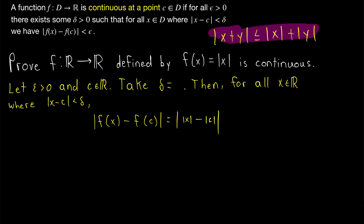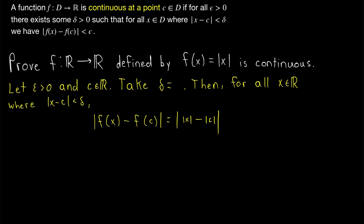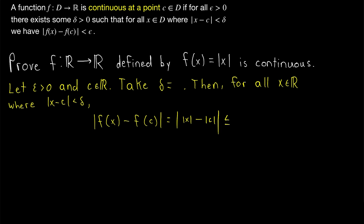Remember, to deal with the absolute value of a sum, we often use the triangle inequality. For the absolute value of the difference of two absolute values, we can use the reverse triangle inequality. The reverse triangle inequality tells us that the absolute value of the difference of two absolute values is less than or equal to the absolute value of that difference without the absolute values on the inside. So the absolute value of |x| minus |c| is less than or equal to the absolute value of x minus c.